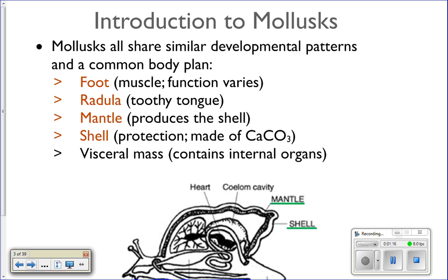Here are the features that they all share. They have a foot — a big muscle they use to move. They've got the radula, which is like a toothed tongue they use to eat. They've got the mantle, which secretes the shell and covers the internal organs. The shell is for protection. And the visceral mass is where all the internal organs are.